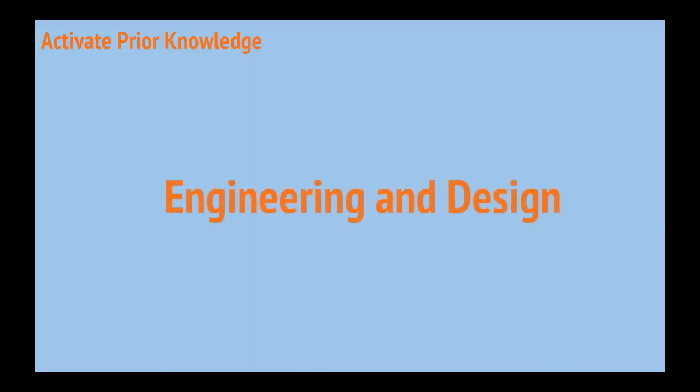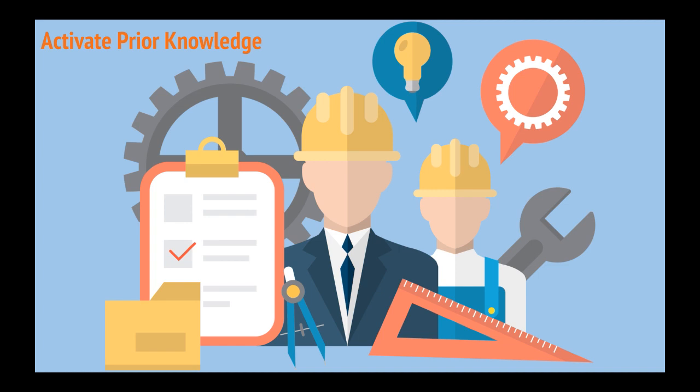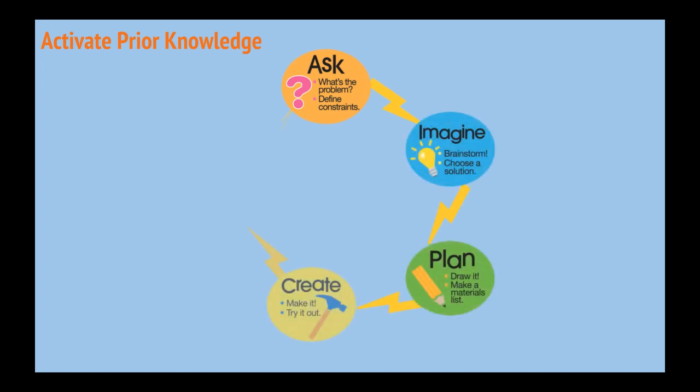Now, let's look at the engineering and design process. The purpose of the engineering and design process is to help engineers solve problems that are unique to engineering. There are five steps: Ask, imagine, plan, create, and improve.